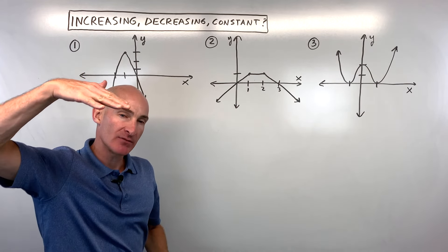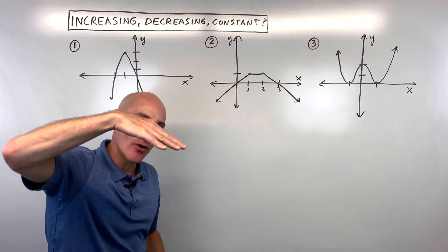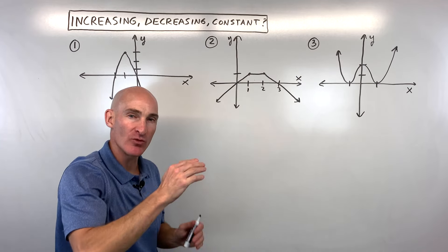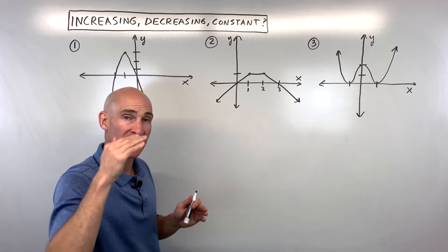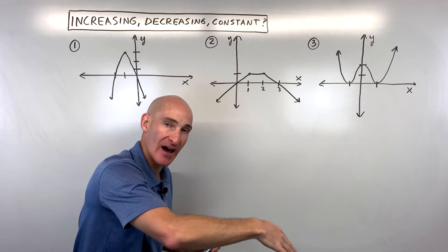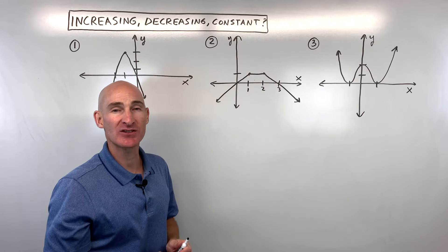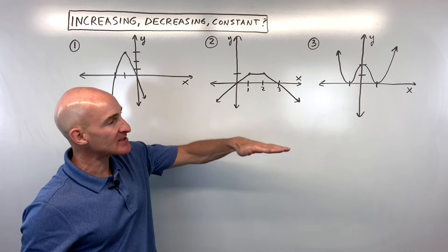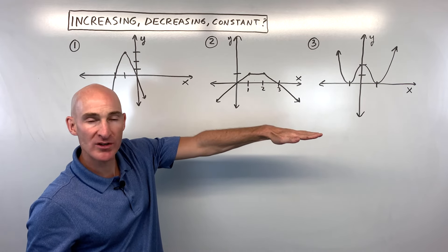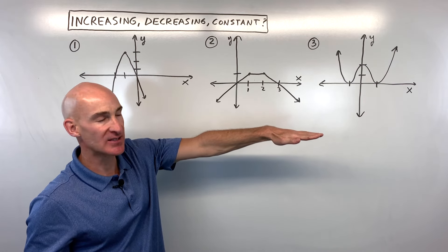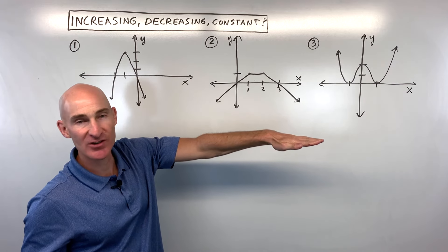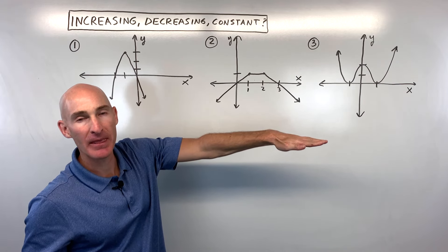Decreasing is like going downhill — reading from left to right and going down to the right. That's called decreasing. And then constant means it's like a horizontal line, so it has a slope of zero.